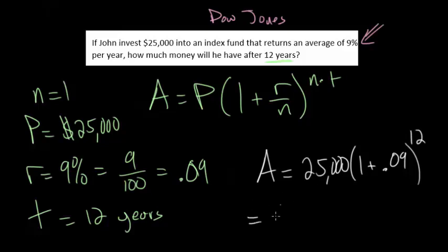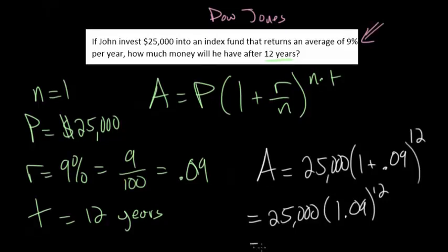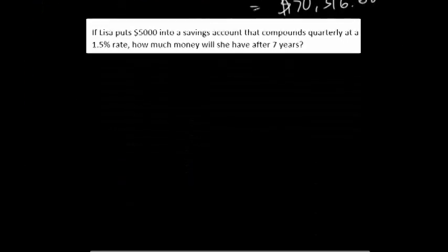When you're going to put this into the calculator, you've got to use your order of operations. We first want to simplify our parentheses to 1.09, and then raise that to the 12th power first and then multiply by 25,000. When you actually calculate this, what you get is a value of $70,316.62. So investing $25,000 into an index fund over 12 years, you nearly triple your money at a rate of 9%. Let's now look at a second example problem.